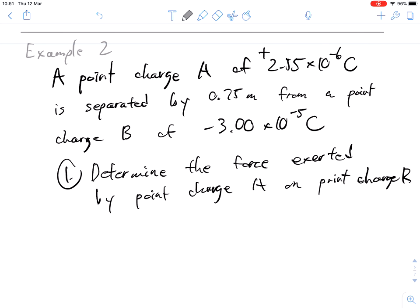Example number two. This time, we're going to be working with Coulomb's Law here. A point charge A of positive 2.55, so in the textbook it doesn't actually say positive, but if it doesn't, it's actually positive, 2.55 times 10 to the power of negative 6. So Coulomb charges are usually quite small. If you have one coulomb, that's like being struck by a lightning bolt, guys. So we don't deal with static charges that large, usually. It's separated by 0.75 meters apart. So really quite close. And the point charge B is negative 3 times 10 to the negative 5. So again, a smaller number. Determine the force exerted by point charge A on point charge B.